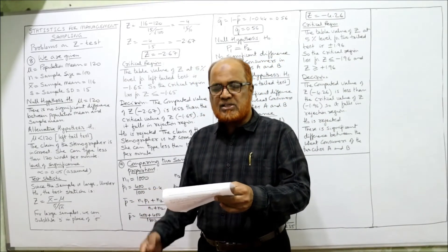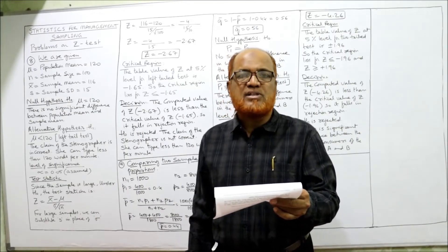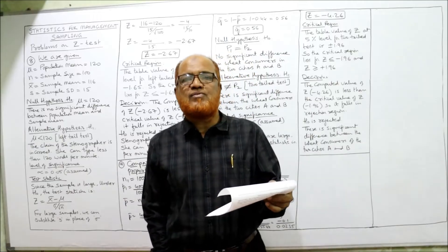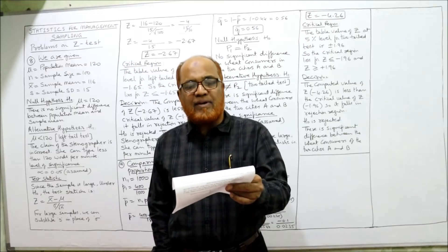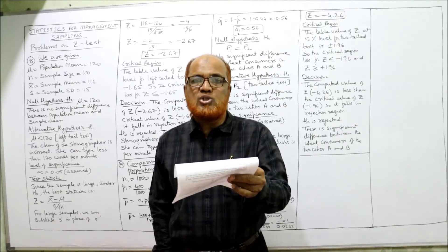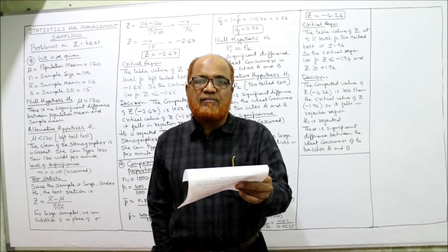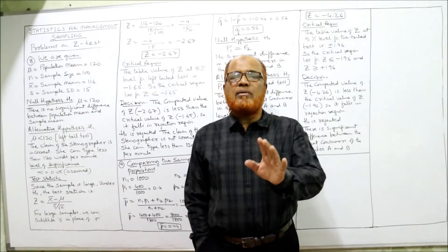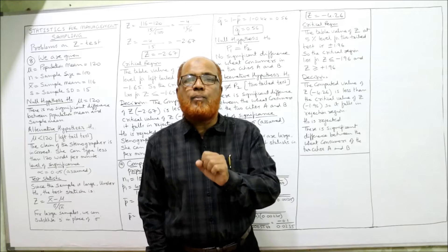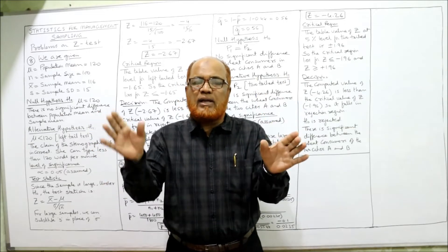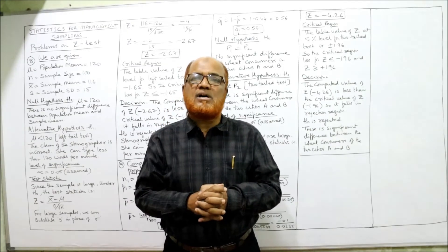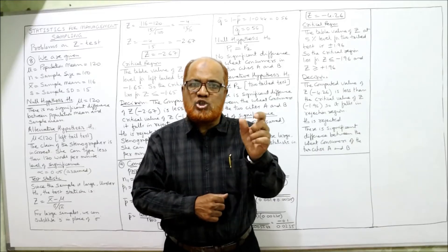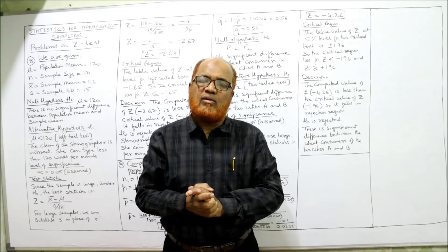Now see the ninth one. In a random sample of 1000 persons from town A, 400 are found to be consumers of wheat. In a sample of 800 from town B, 400 are consumers of wheat. Is there any significant difference between town A and town B in consumption of wheat? In this problem we are not given any mean or standard deviation — we are given the proportion. We want to find out whether the proportion of consumers of wheat is the same in both towns or not.